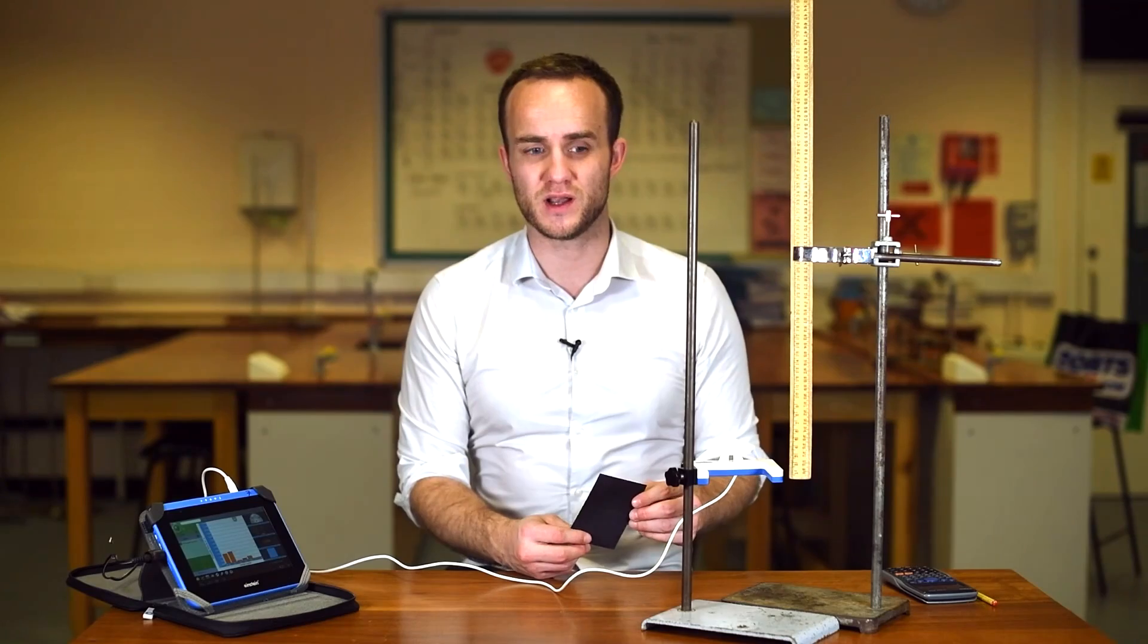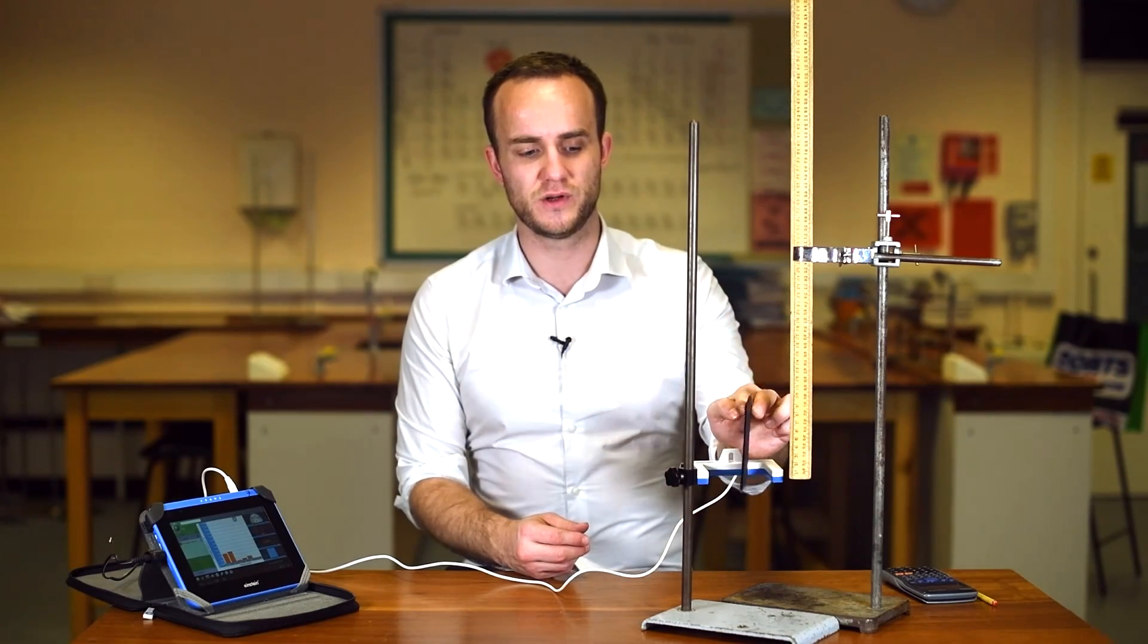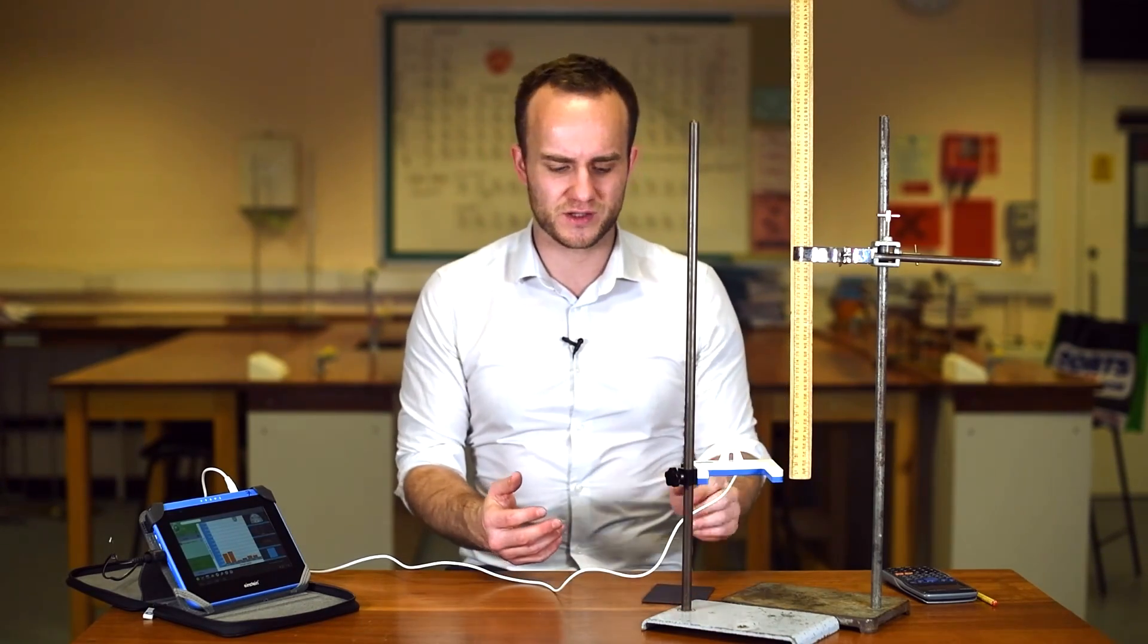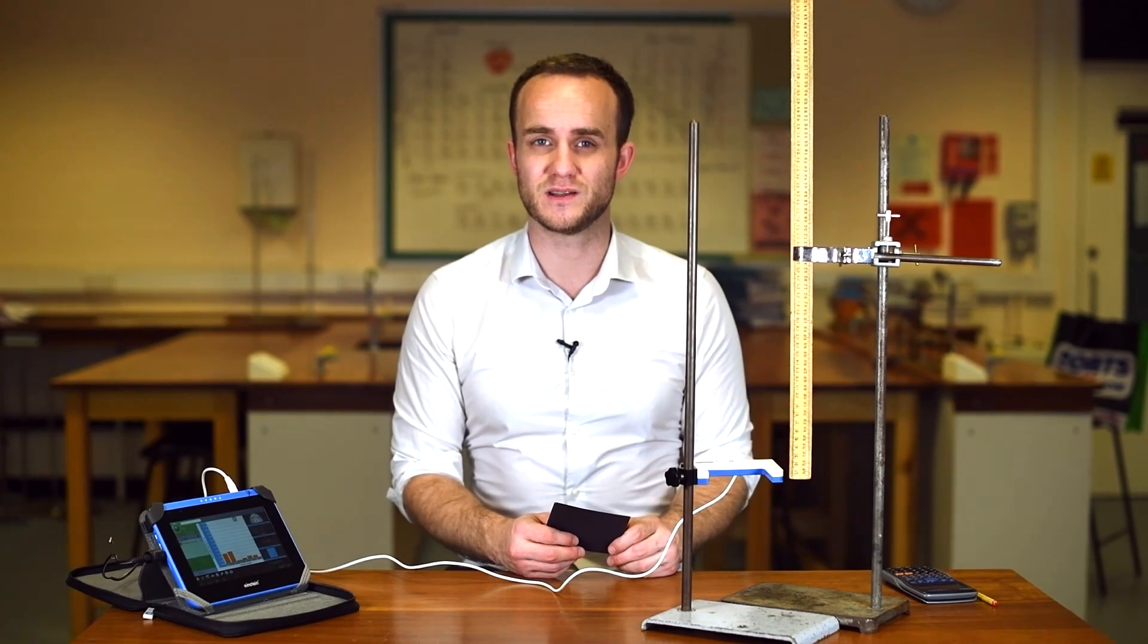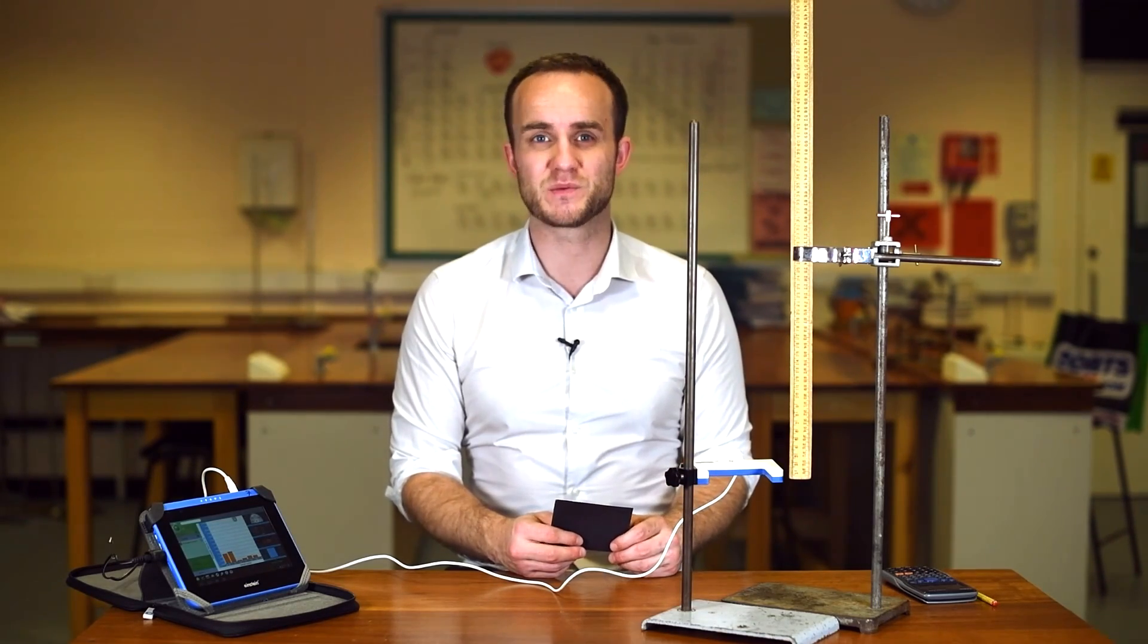And this is a bit of an issue because as the card goes through it's still accelerating, and so that means that whatever velocity the data logger records, that's an average speed that the card goes through the light gate with.